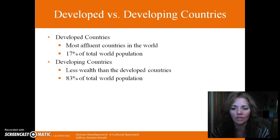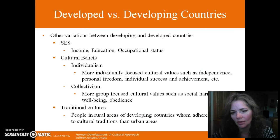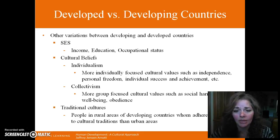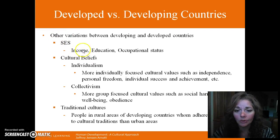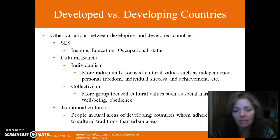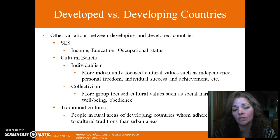We are very privileged from a world standpoint. Even if you live in a lower socioeconomic group or SES group here in the United States, your quality of life is still substantially higher than those individuals living in developing countries. So it's really important to understand the wealth disparities and population disparities between those types of countries, and that will factor into some of the different ideologies and cultural beliefs of the countries. SES — your socioeconomic status — includes your income, education, and occupational status.